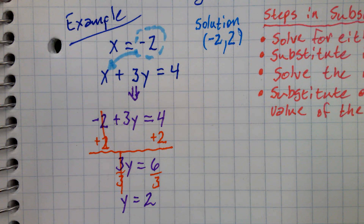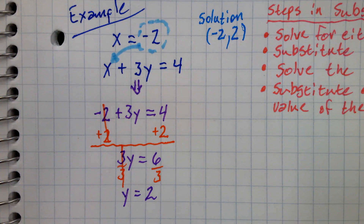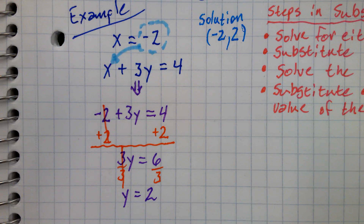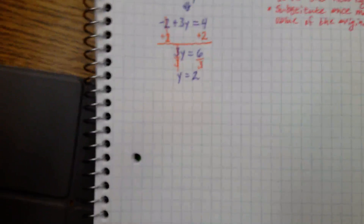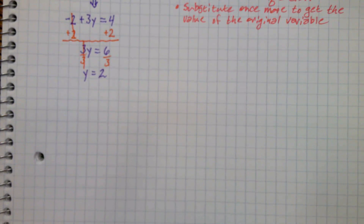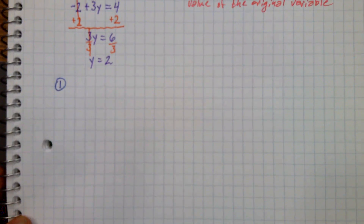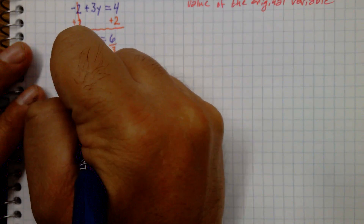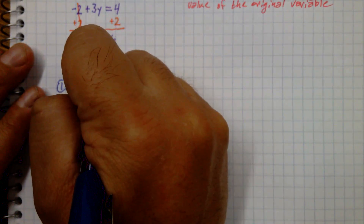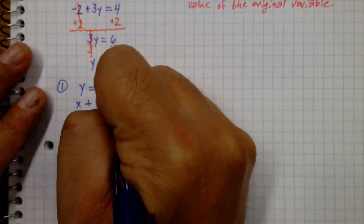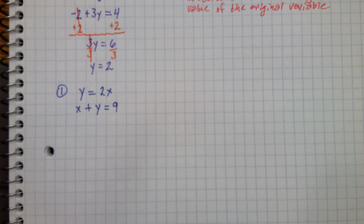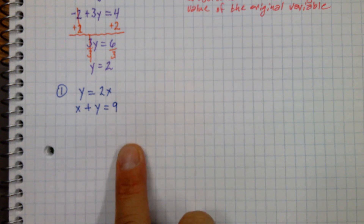That was the easiest type of substitution example, but they'll get tougher. Let's move on. Here's the first official example: y equals 2x, and x plus y equals 9. Write that down. We're going to solve this system by substitution.